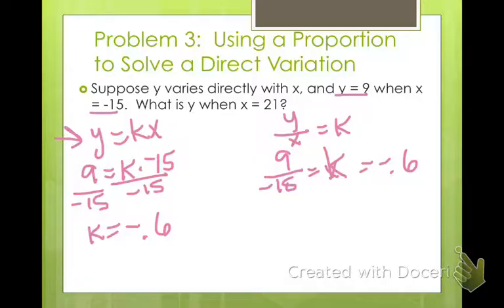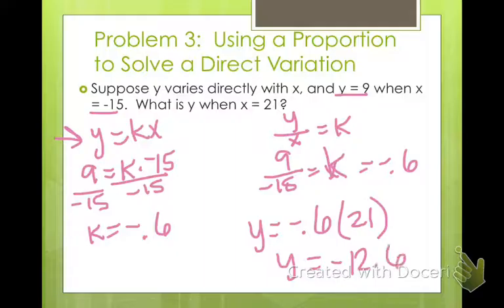Okay, so what is y when x equals 21? Well, I'm going to say y equals our constant variation, negative 0.6, times our x value, 21. So you just go ahead and take 21 times negative 0.6, and you get that y equals negative 12.6. So that would be your answer.